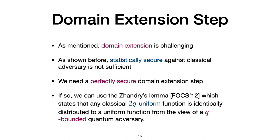Now, let's go back to the first step, the domain extension step. As mentioned, domain extension is somewhat challenging and we also showed statistical security against classical adversaries in this step is not sufficient. So, we need a perfectly secure domain extension step. If so, we can use Zandry's Lemma in FOX 2012 which states that any classical 2Q uniform function is identically distributed to a uniform function from the view of a Q-bounded quantum adversary. This directly gives us a Q-bounded quantum PRF.